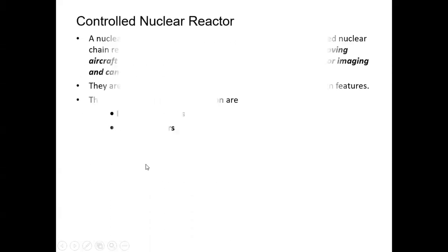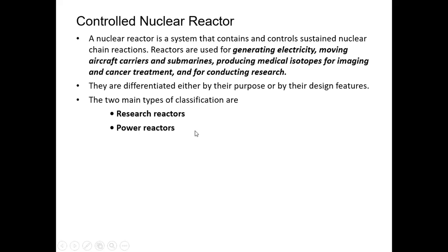A controlled nuclear reactor system is one in which the multiplication factor can be set equal to one or increased slightly above one. Reactors are generally used for electricity generation, but can also be employed for aircraft carriers and submarines. They can produce medical isotopes for imaging and cancer treatment, and can be used for conducting research.